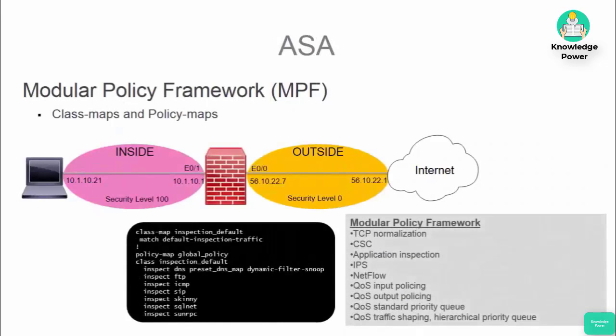Modular policy framework is a method for applying different security features with class maps and policy maps, similarly to applying QoS and zone-based firewall configurations on an IOS router. Once traffic is matched with a class map, a policy map is used to apply traffic policies like application inspection, quality of service, and IPS redirection.